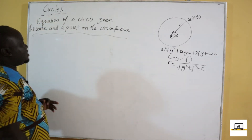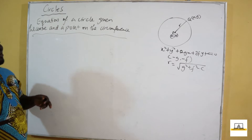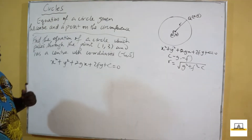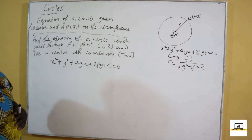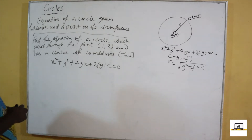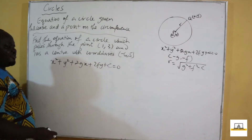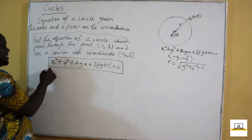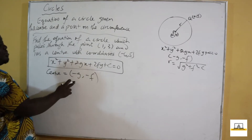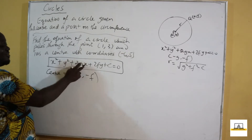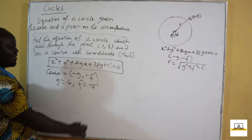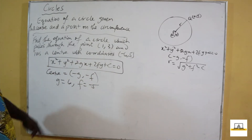When we are given a point on the circumference and the center, we find the equation using the general equation. Our center is (-6, 5). Since the center equals (-G, -F), we know that G equals positive 6 and F equals negative 5, because we are using minus G and minus F.